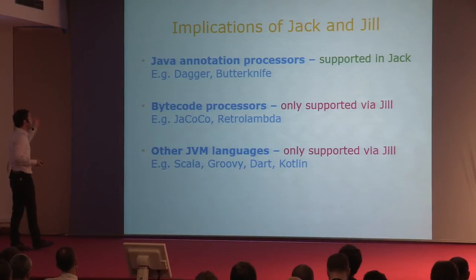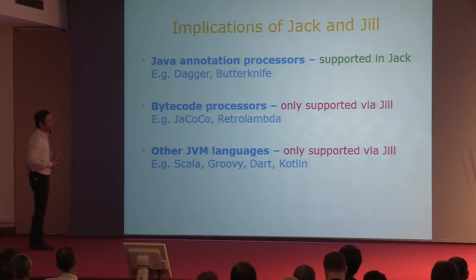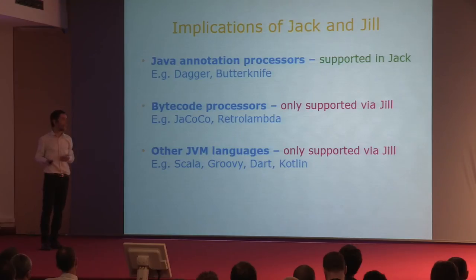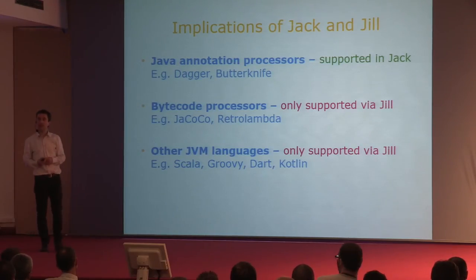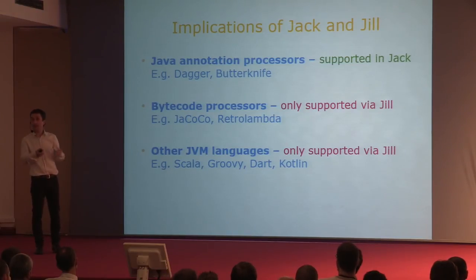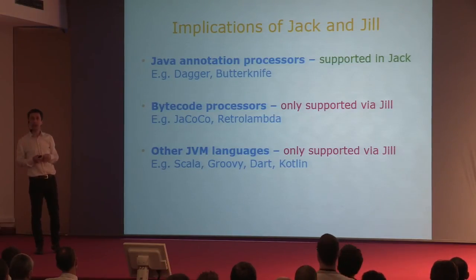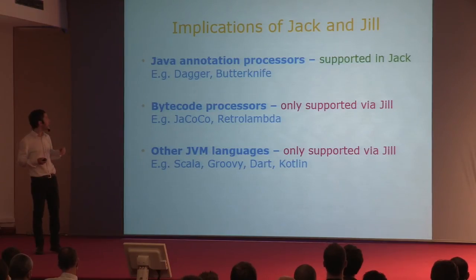For instance, if you use Java annotation processors—if you're using Dagger, for instance—those are like plugins for the Java compiler. The Oracle Java compiler has disappeared in the Jack process, so you'd need an alternative. Luckily, the Jack compiler supports exactly the same plugins, so if you have annotation processors, you can still use them in the Jack compiler.